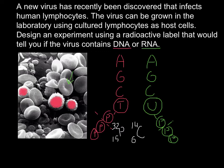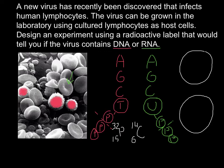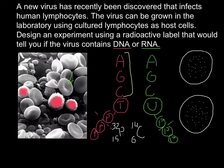For the next stage of our experiment, we need two petri dishes. In each petri dish we are going to add lymphocytes already infected with the unknown virus — we don't know whether it is a DNA or RNA-based virus. We place them on a specially prepared medium that allows lymphocyte growth. In one petri dish we are going to add DNA bases: three of these bases are the same as in RNA, so we are not going to label them with a radioactive marker, but one base — thymine — is going to be radioactively labeled.